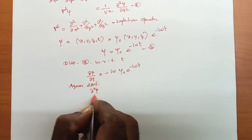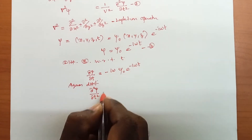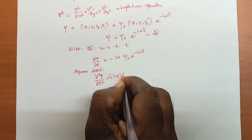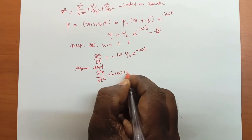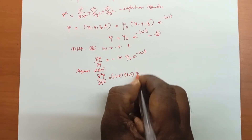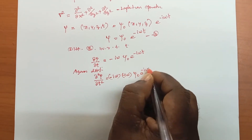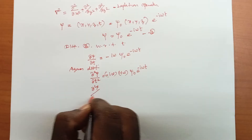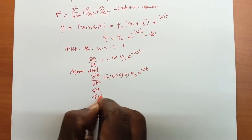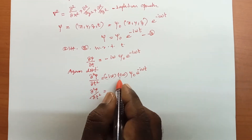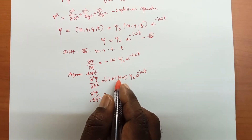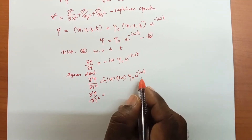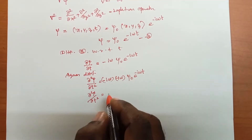Differentiating again: ∂²ψ/∂t² = (−iω)(−iω) · ψ₀ · e^(−iωt). Simplifying, since i² = −1, we get ∂²ψ/∂t² = −ω² · ψ₀ · e^(−iωt).